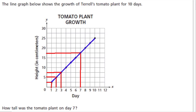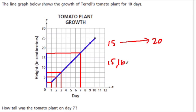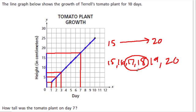So that height is what? We're going up by increments of 5 every time we go up 2 boxes — so 5, 10, 15, 20. It's not quite 20; it's halfway to 20 from 15. So we're going from 15 up to 20, and it's right in the middle: 15, 16, 17, 18, 19, 20. The middle between 15 and 20 is halfway between 17 and 18, which is 17 and a half.